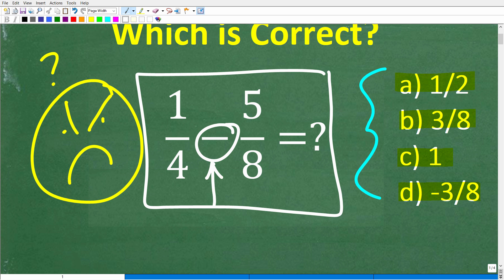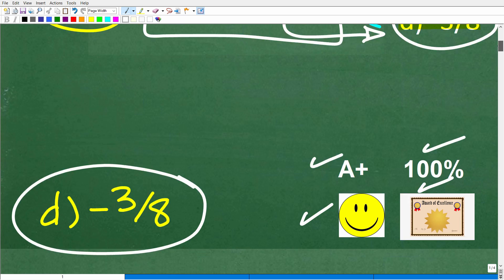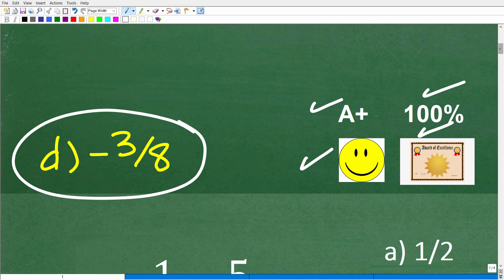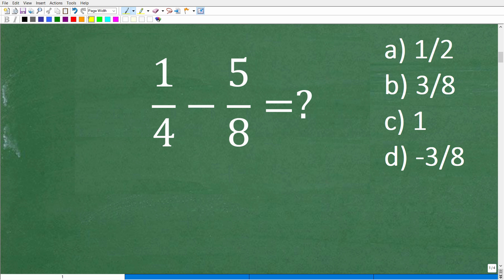And obviously, this is a subtraction problem. But if this was an addition problem, I think a lot more of you would have gotten this right. Because some of you may have answered with 3/8. And if you got 3/8 as your answer, that's pretty good. But we've got to be careful here, because this is actually a negative answer. And of course, I'll explain this as we get into the solution.